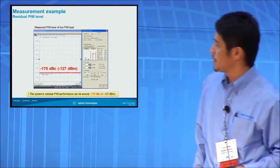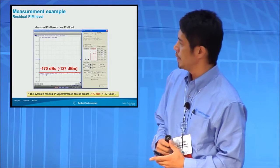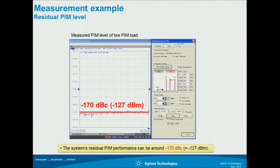This is the measurement result of our prototype system. It has 170 dBc residual PIM performance. This depends on the passive components used in the measurement configuration. Our network analyzer has a lower noise floor than the residual PIM — in other words, our network analyzer is good enough to measure PIM.